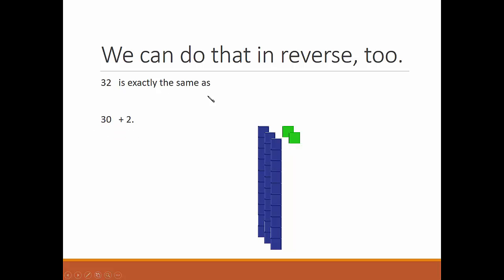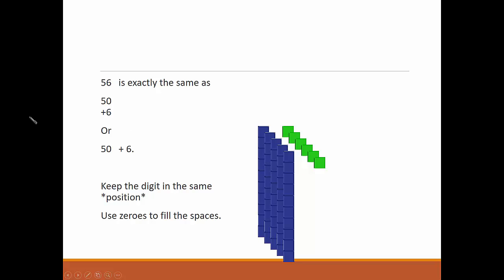Use zeros to fill in the spaces. 32 is exactly the same as 30 plus 2. 56 is exactly the same as 50 plus 6. We can write it vertically or horizontally, keep the digit in the same position, use zeros to fill in the spaces.